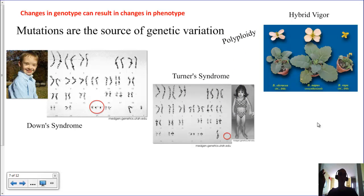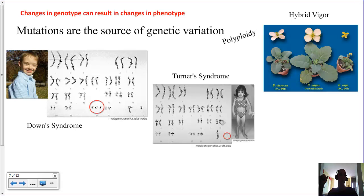We can't really do polyploidy in animals. Typically when chromosome numbers are wrong and we're supposed to have two of each chromosome, we get an organism that doesn't develop. Occasionally some do — two examples are Down syndrome, where there's an extra chromosome 21 (trisomy), and Turner syndrome, where there's only one X chromosome and no Y, giving only 45 chromosomes (monosomy). Mutations are creating genetic variation — deletions, duplications, insertions, and more complex chromosome-level mutations all result in changes in genotype.